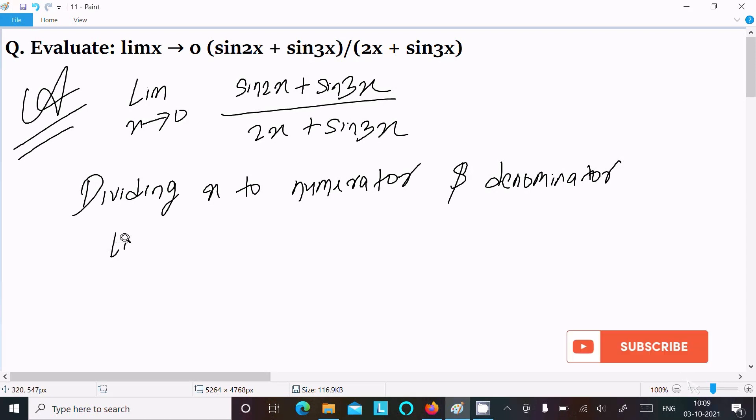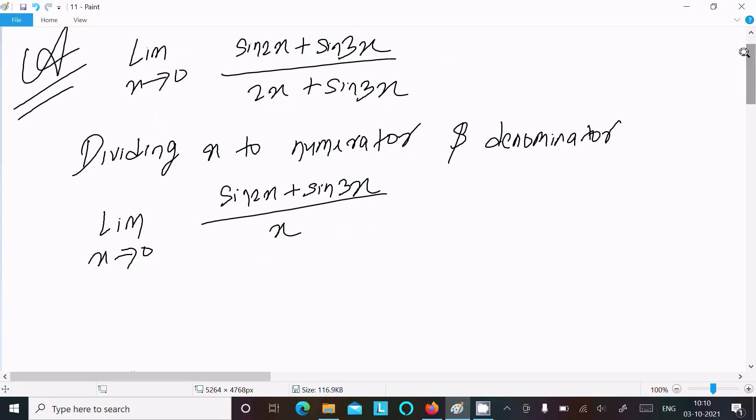So writing here, limit x tends to 0: (sin 2x plus sin 3x) divided by x. Now here, after this, 2x plus sin 3x divided by x.